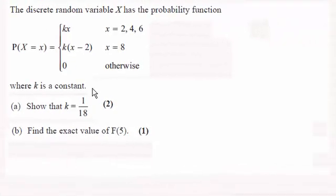Hi there. Now here we have a question based on this discrete probability distribution function. We've got to work out the constant k and then find the exact value of F of 5.